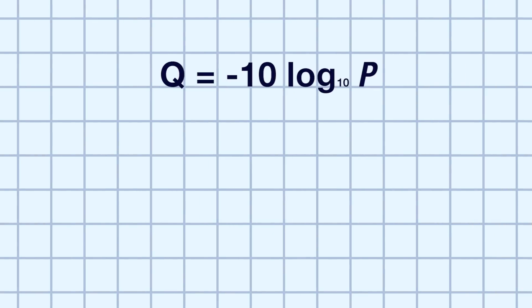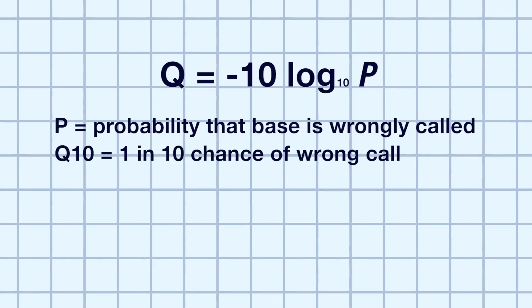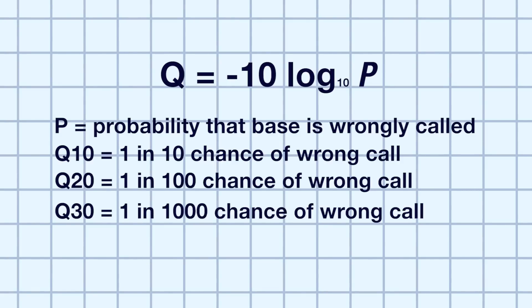Let's take a look at our lab book. The Q-score is a value derived from the formula Q equals negative 10 log P, where P is the probability that the base is wrongly called. A Q-score of 10 translates to a 1 in 10 chance of the base being called wrong. Q20 is a 1 in 100 chance, and Q30 is a 1 in 1000 chance. What I just described is what we refer to as the predicted quality in the sequencing world. You've likely encountered a metric called percent bases greater than or equal to Q30, which translates to the percent of sequenced bases that have a predicted quality score of 30 or more.